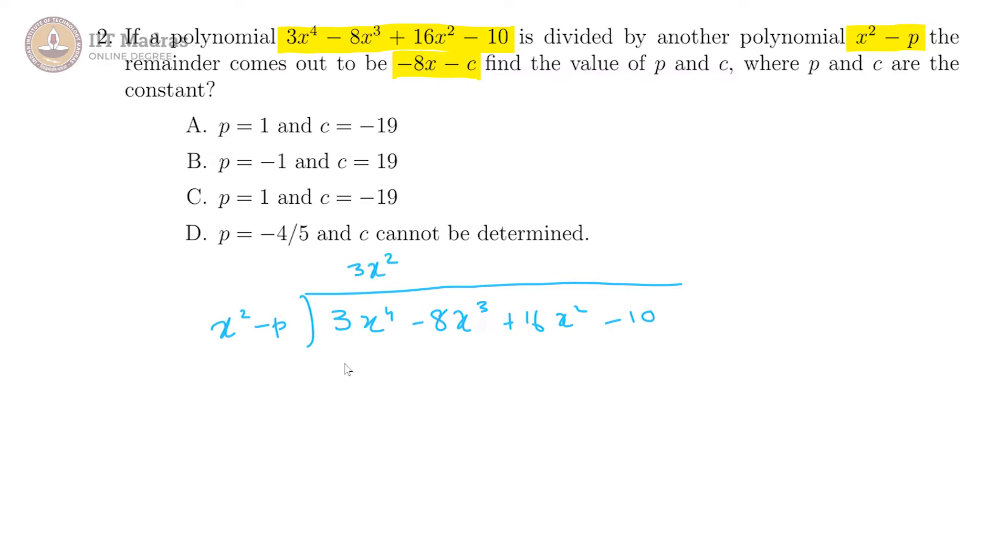This gives us 3x square to start with, and this will be 3x power 4 minus 3p x square. We should write it there minus 3p x square, and this goes off and we get minus 8x cube plus this becomes plus. So 16 plus 3p x square minus 10.